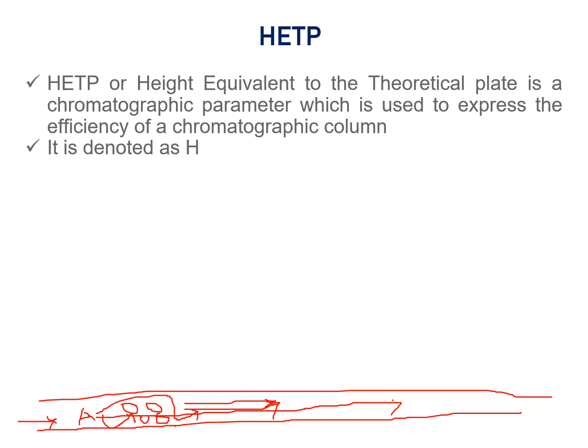Due to the interaction of the analyte with the stationary phase and the mobile phase, the analyte achieves an equilibrium in the column. The height or length or the portion of the chromatography column where the analyte achieves equilibration due to interaction of the stationary phase and mobile phase is called Height Equivalent to the Theoretical Plate.